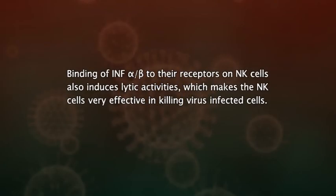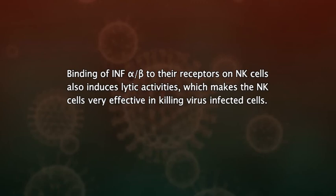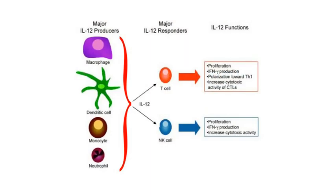Binding of interferon alpha or beta to their receptors on NK cells also induces lytic activities, which make the NK cells very effective in killing virus-infected cells. Interleukin-12, which is produced very early in the innate immune response, can also enhance the activities of NK cells.